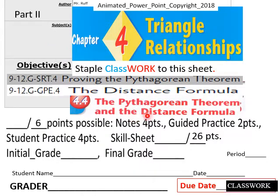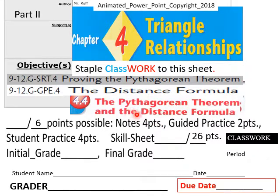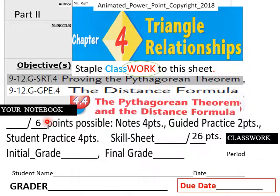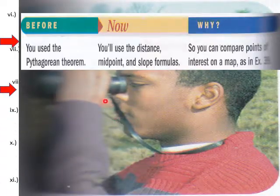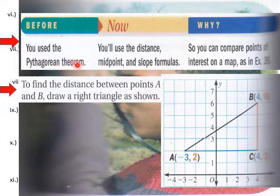Lesson 4.4, the Pythagorean Theorem and the Distance Formula. There are 26 points of classwork and six points for notebook taking. This is part two of this lesson. Before you used the Pythagorean Theorem, now you'll use the Distance, Midpoint and Slope Formula so you can compare points of interest on a map.